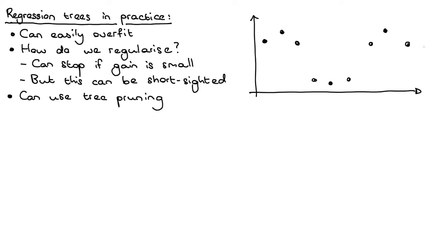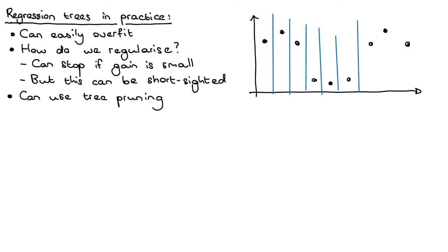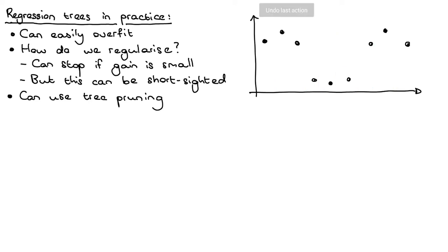Consider this situation: we have a dataset with nine points. Going through the normal regression tree algorithm, we consider splitting at each of the possible split points. At each of those possible points, we consider how much the loss improves if we decided to split there.